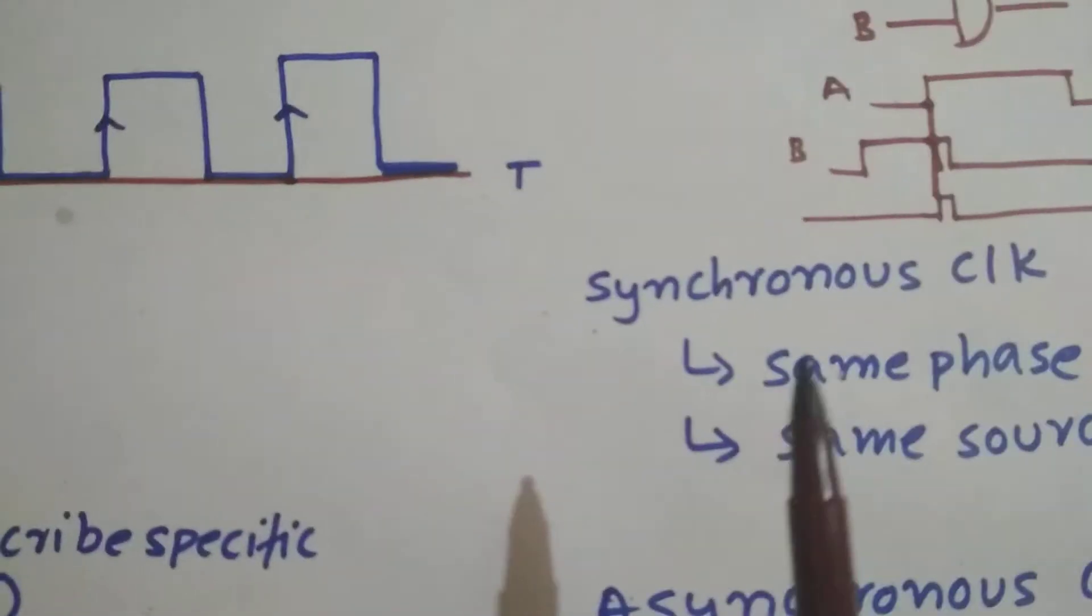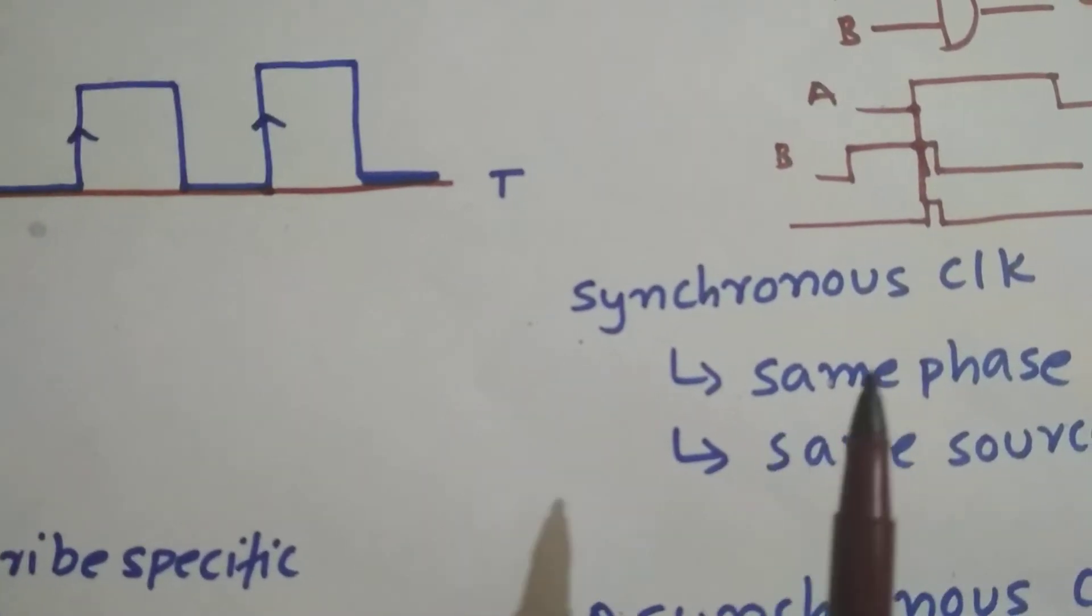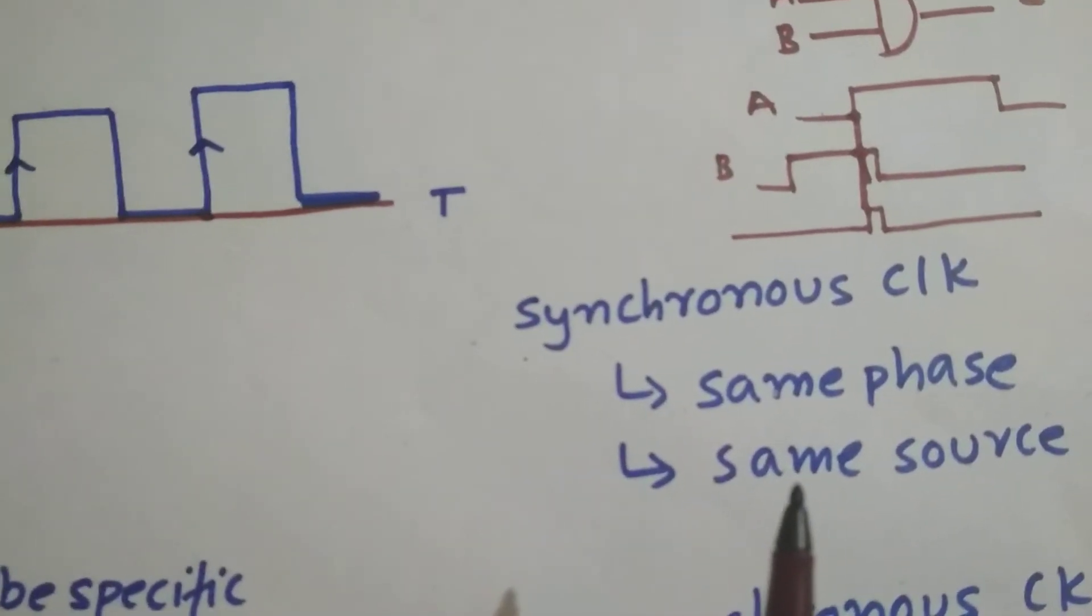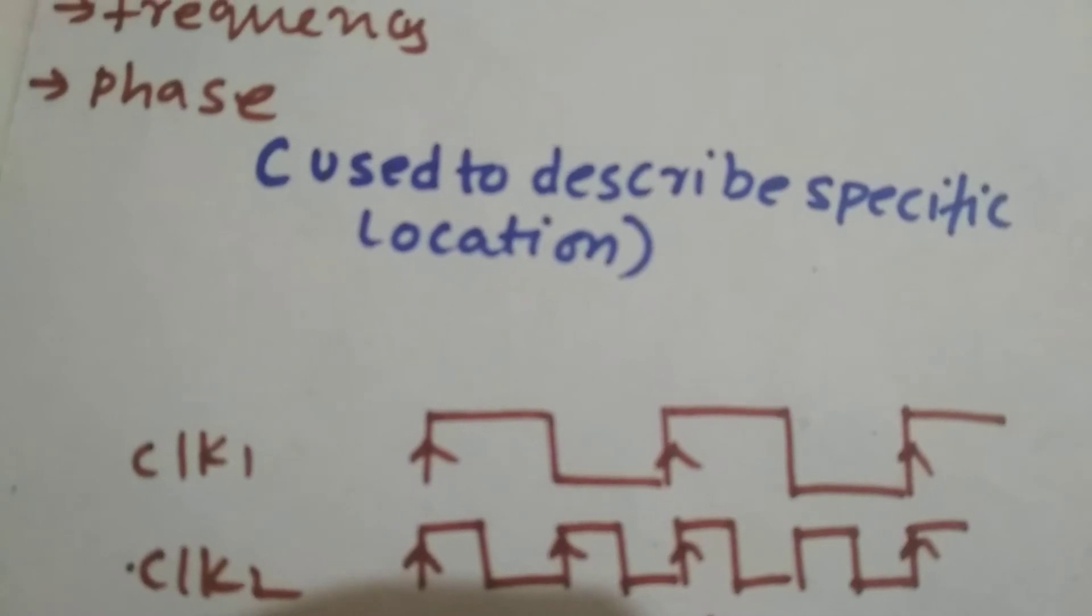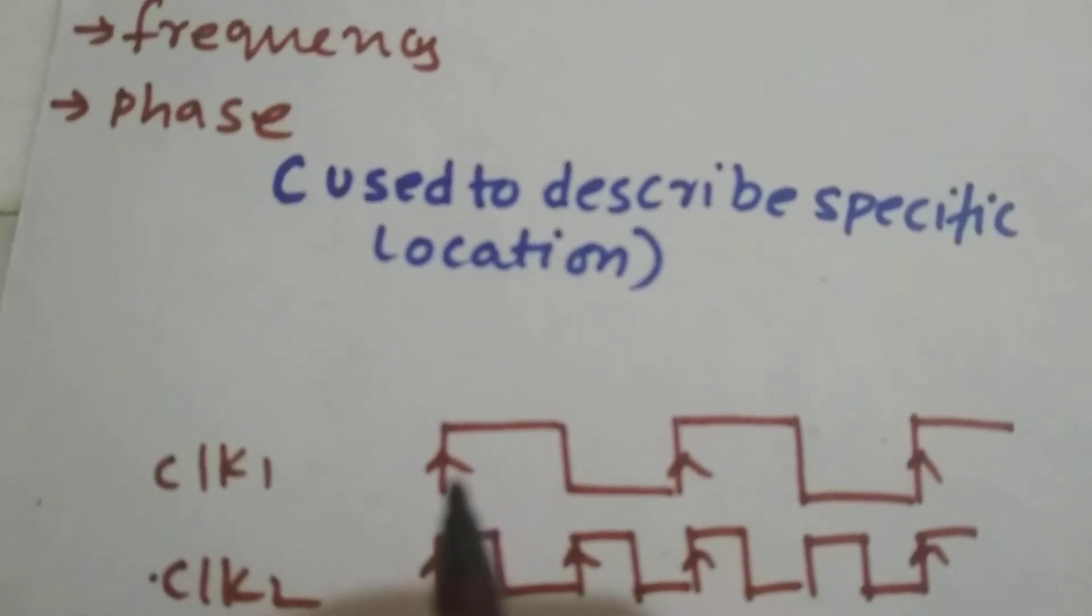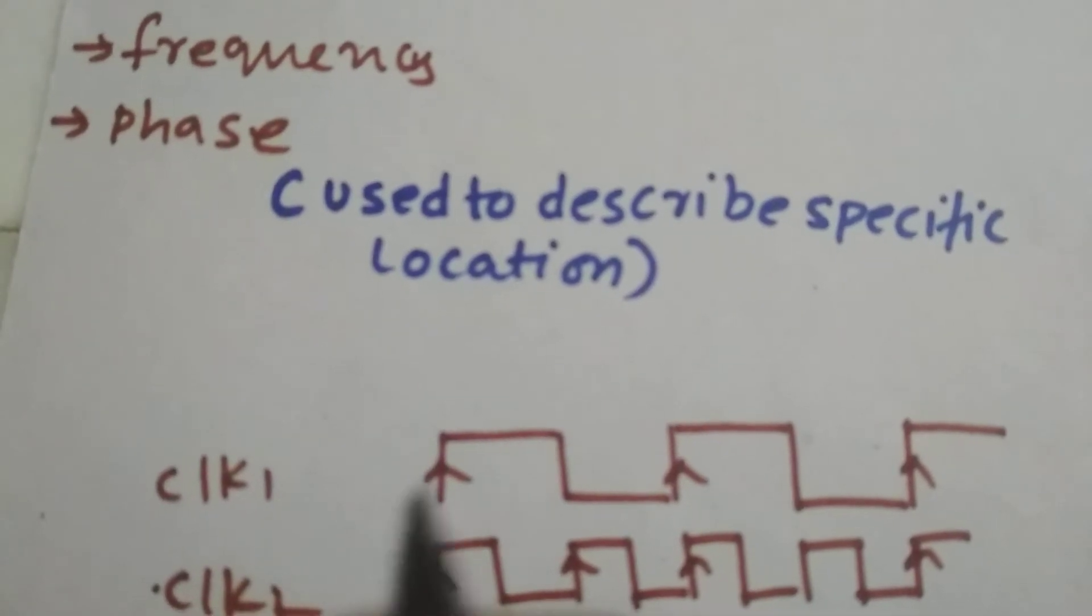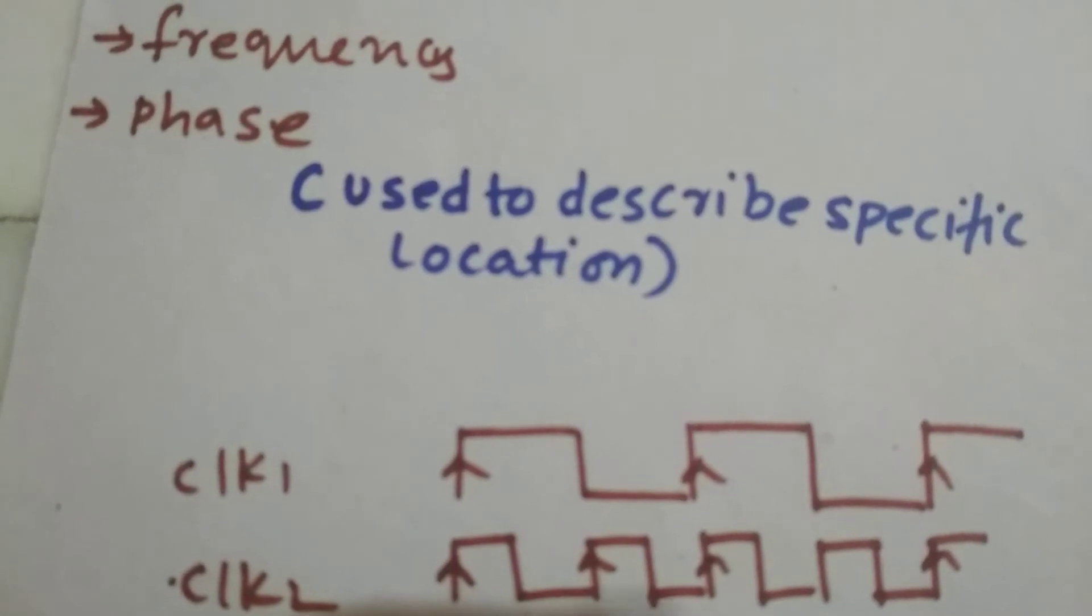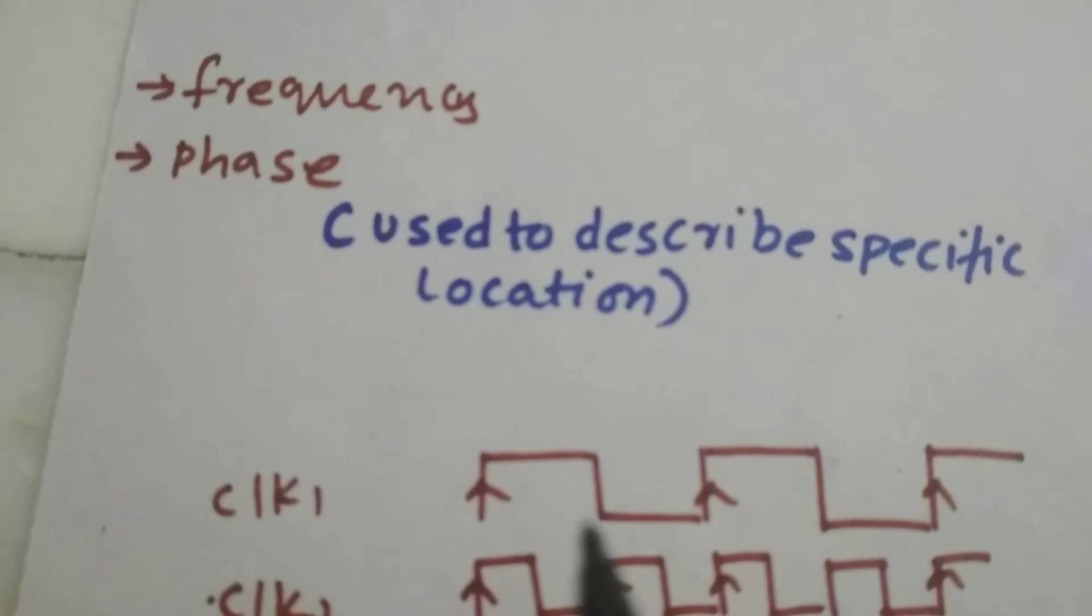Synchronous clocks means the clocks are having the same phase and the same source. If the clock domain of the two clocks are same, then it's a synchronous clock with the same phase. As you can see here, clock one and clock two are having the same clock source - the assumption is that the same clock source is being used. Clock one and clock two are in phase. As you can see, this positive edge is this positive edge, and this positive is having this positive, so they are in phase.